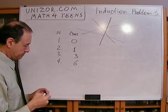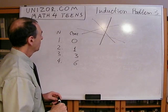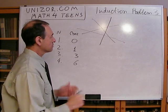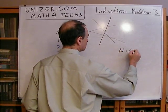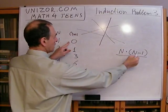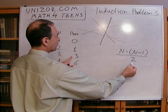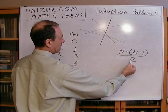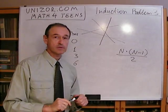So these are my sequences. It looks like the formula should be straightforward: n times (n minus one) divided by two. Let's check it. For n equals one, it's zero. For n equals two, it's two times one divided by two, which is one. For n equals three, three times two divided by two, which is three. And for n equals four, four times three equals twelve divided by two, which is six. That seems to be the right formula. Try to prove it using the method of mathematical induction.